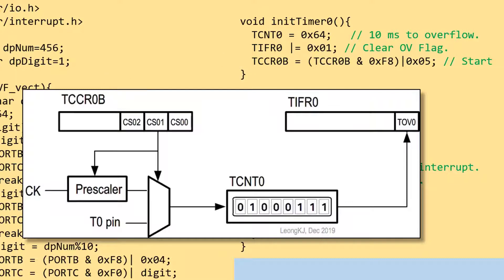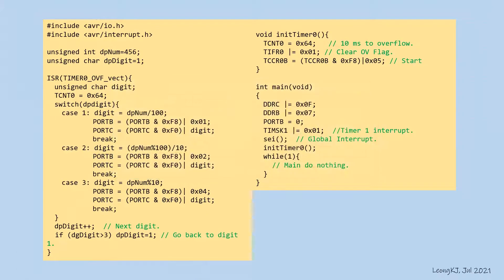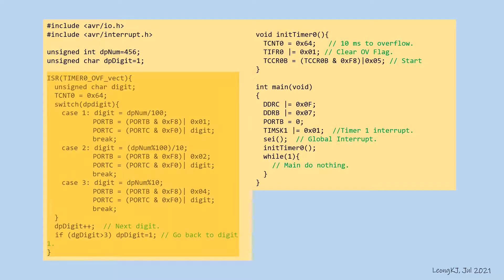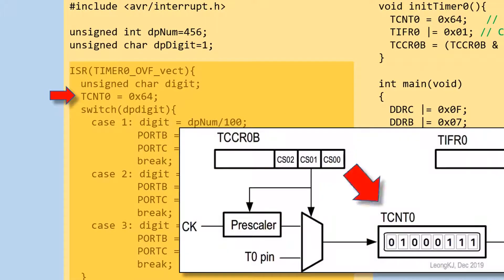When the timer overflows, the overflow flag will be set, causing a timer interrupt. The timer service routine will then be executed. The timer is reloaded with 0x64 hex to make it overflow in the next 10 milliseconds.